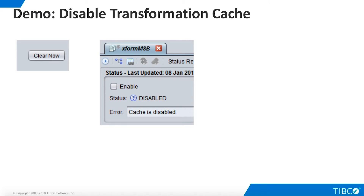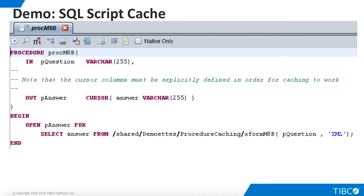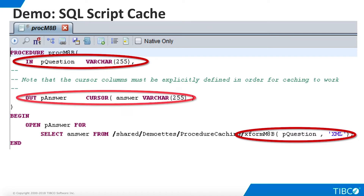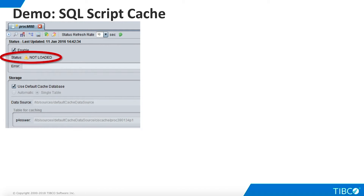Caching a transformation is one option for procedure caching. Next, let's look at caching for SQL scripts. These scripts will make use of our transformation, so before proceeding, be sure to clear and disable the transformation cache and save your work. Here is a simple SQL script we want to cache. It accepts an input parameter that represents a question for the Magic8Ball. It plugs this question into a call to the Magic8Ball transformation and returns the answer column as a cursor. Note that the row structure of the cursor must be explicitly defined in order for caching to work. Again, we are using the TDV default cache, so we simply need to enable the cache and save.